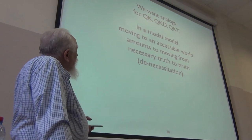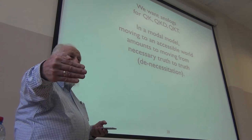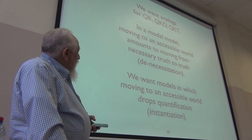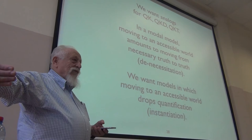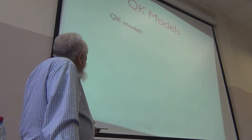In a modal model, when you move to an accessible world, you move from necessary truth to truth — if box x is true at a world and you move to an accessible world, you're at a world where x is true; you've lost the box. Moving to an accessible world is a kind of de-necessitation. I want models where moving to an accessible world drops a quantification — in effect doing an instantiation. Moving to an accessible world should instantiate your universal quantifiers.